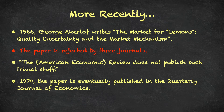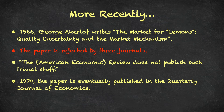Akerlof submits the paper to several of the top journals in economics. The paper is famously rejected by three journals. In a quote from Akerlof later on describing the referee reports, apparently one of them said something along the lines of 'the review does not publish such trivial stuff,' referring to the American Economic Review, which is the very top journal in all of economics even today. Eventually, in 1970, the paper is published in the Quarterly Journal of Economics. This has become the stuff of legend, especially for PhD students in economics who are trying to get published.